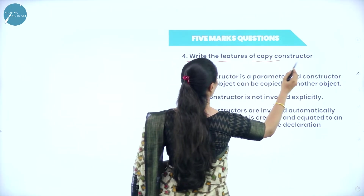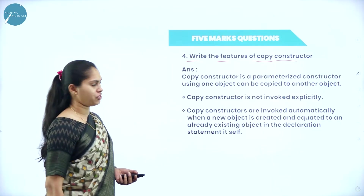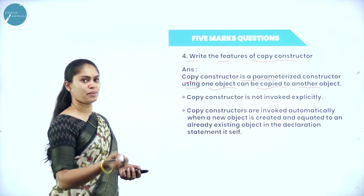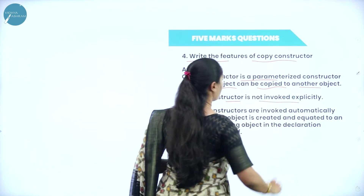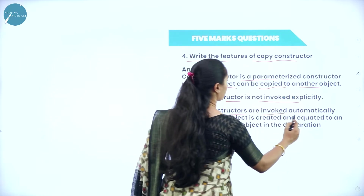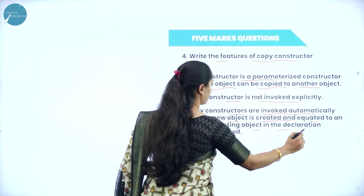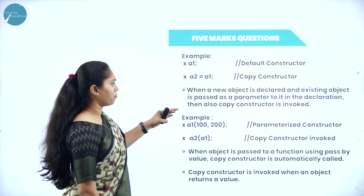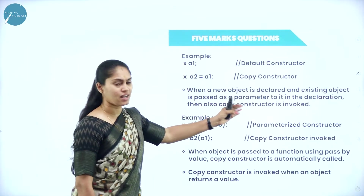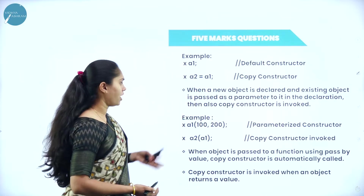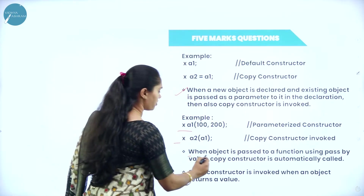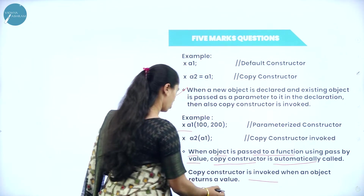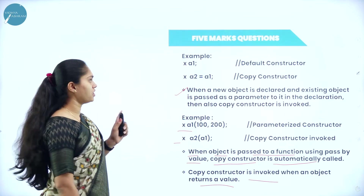Next, write the features of copy constructor. You have to write any five features. Copy constructor is also a parameterized constructor using which one object can be copied to another object. The content of one object will be copied to another object. Copy constructor is not invoked explicitly; it is invoked automatically when a new object is created and equated to an already existing object in the declaration statement. When the new object is declared, the existing object is passed as a parameter. Also, when the object is passed to a function using pass by value, copy constructor is called automatically, and the copy constructor is invoked when an object returns a value.